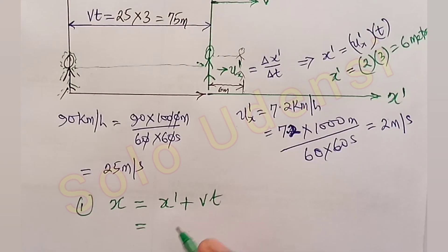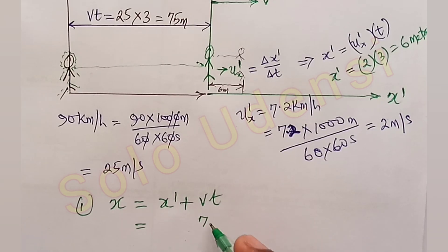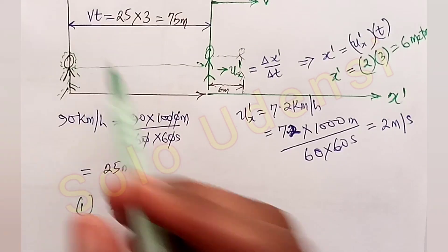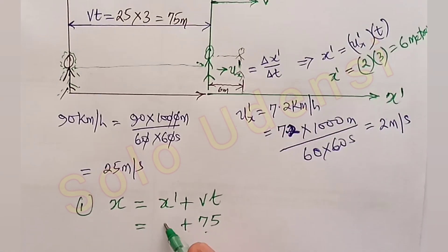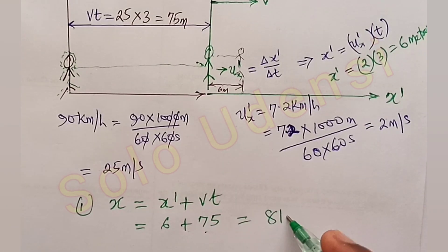So it's equal to vt is 75 meters from here. We have calculated it to be 75 meters plus x prime. From here, we have calculated it to be 6. So it's equal to 81 meters.